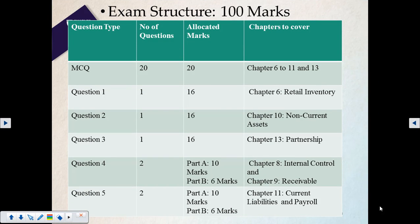The exam will have 20 MCQ questions from chapters six to eleven plus partnership, excluding chapter twelve which was not covered. There will be five long questions, each worth 16 marks. Question one is from retail inventory, question two from chapter ten non-current assets, question three from chapter thirteen partnership, question four from internal control covering chapters eight and nine, and question five from chapter eleven. Every chapter except chapter seven has a calculation question.